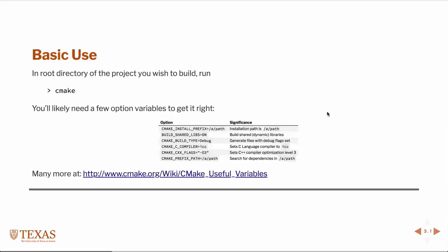However, this rarely works without setting certain environment variables or additional instructions to CMake. Some common ones include CMakeInstallPrefix, which you set to a path that tells it where you want to install the compiled code. By default, CMake builds static libraries; if you want shared libraries, you'd set this environment variable to on or true. You can also build debug or release — if you set this to debug, it automatically sets the compiler flags to include debug instructions.